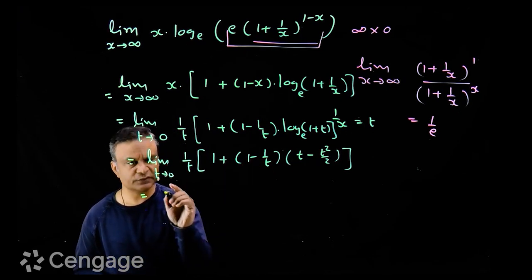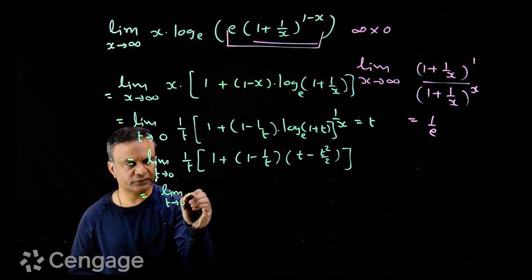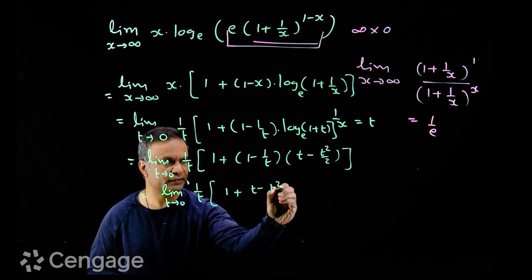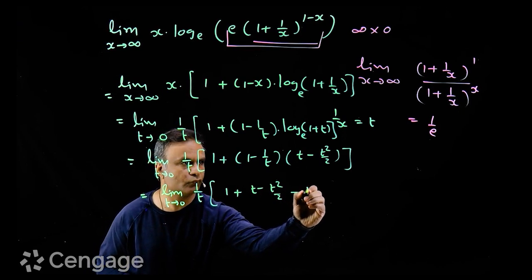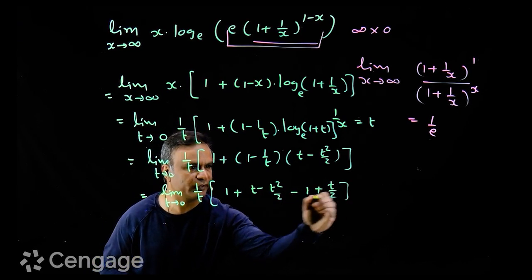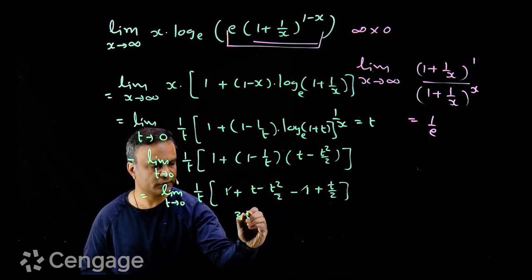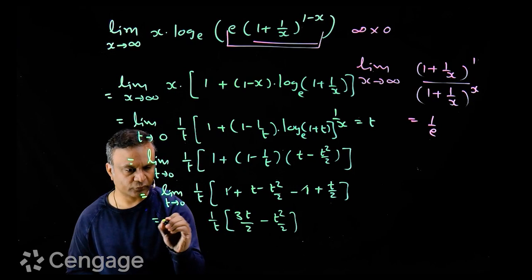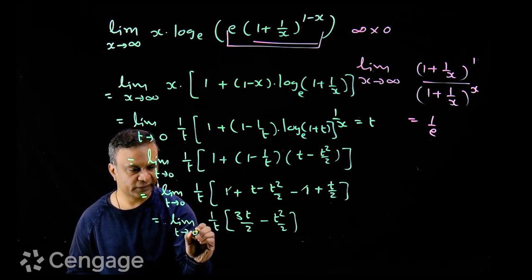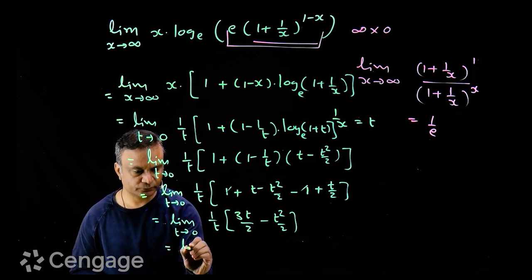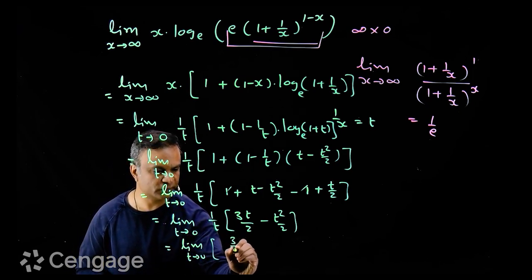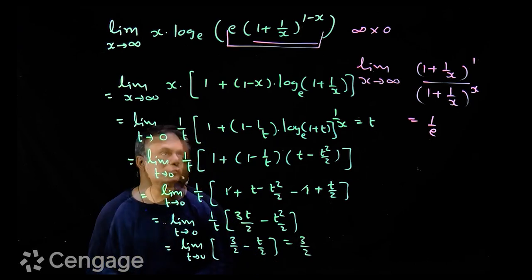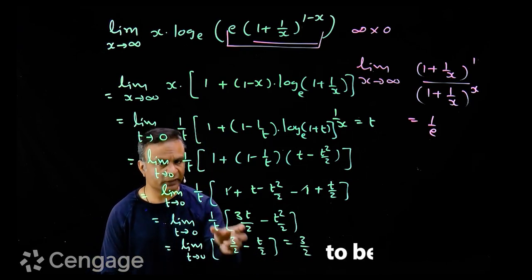So expanding this, we have limit t tends to 0 of 1 upon t, and inside the bracket the expansion gives t minus t squared over 2, minus 1, plus t over 2. The 1s cancel out, leaving in the bracket 3t over 2 minus t squared over 2. Multiplying by 1 upon t gives limit t tends to 0 of 3 over 2 minus t over 2. This value is equal to 3 over 2. So using substitution and the expansion formula we obtain the limit as 3/2.